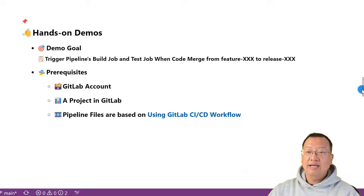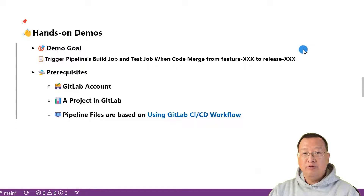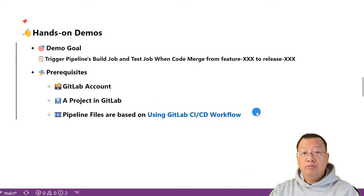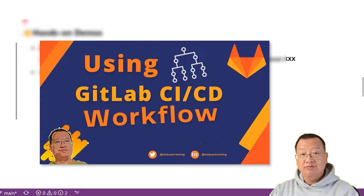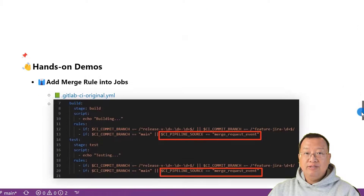In our hands-on demonstration, we are going to learn how to set up a merge trigger rule in a GitLab pipeline. We'll make sure that the build and test jobs are triggered when we merge code from a feature branch to a release branch. Before we get started, there are a few things you need: a free GitLab account and a project in that account. To save time, we'll use pipeline files from my video on using GitLab CI/CD workflow. Once everything is ready, we'll move on to the first demo.